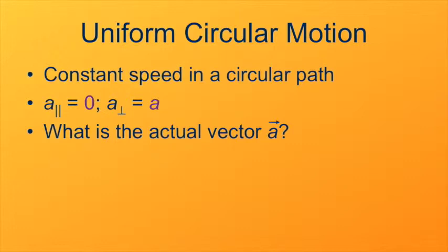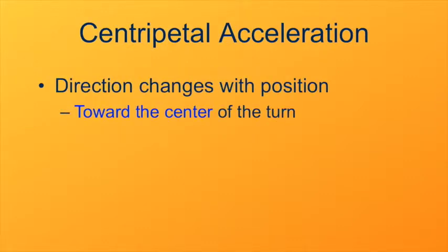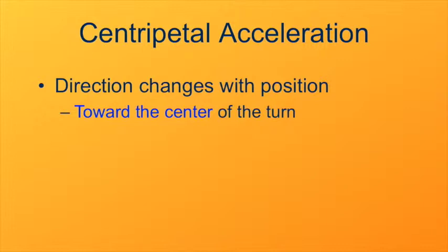So what is this actual vector? We understand that the direction is crosswise to the path, but what's the actual magnitude? And what's the actual direction? Because crosswise could be either direction. The direction is always toward the center of the turn. That makes sense if you think of initial and final velocities as you move around the circle. It's always changing in the direction toward the center of the turn. The magnitude, it turns out, has a very simple formula. It's the square of the speed divided by the radius of the turn. So that's V squared over R. V I refer to as the tangential speed. That's basically how fast the object is moving along its circular path, and R being the radius of the turn again.